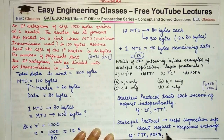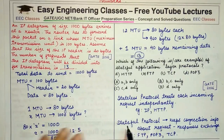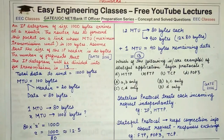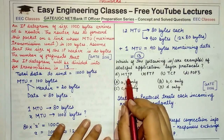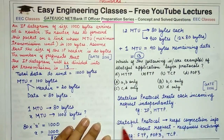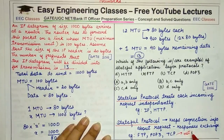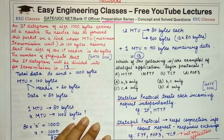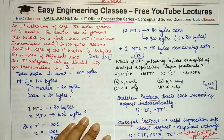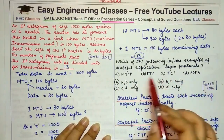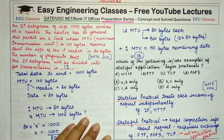Examples of stateful protocols include FTP, POP3, and TCP. However, the question asks for stateful application layer protocols specifically. TCP is stateful but it is a transport layer protocol, not an application layer protocol. HTTP is a stateless protocol. So TCP and HTTP are both excluded.